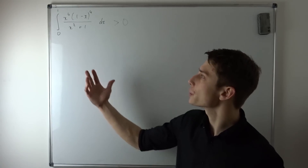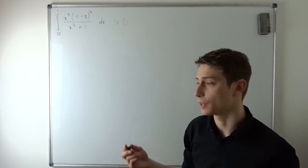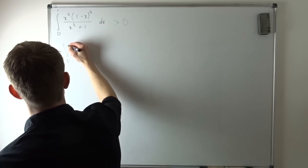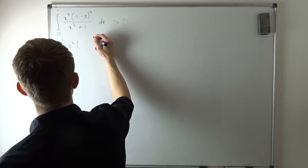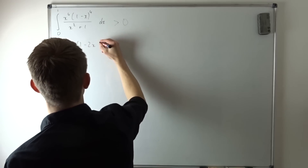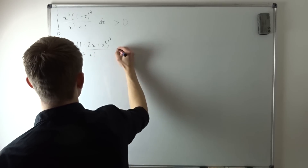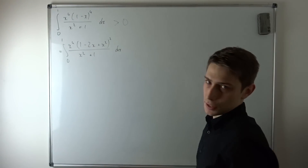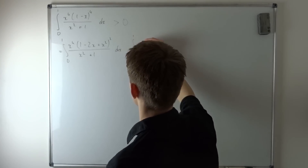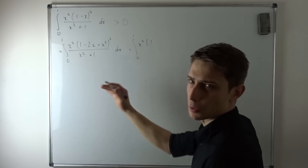With that out of the way, let's get started with the integral. First, we can factor out the (1 minus x) to the fourth power. We note that (1 minus x)² equals (1 minus 2x plus x²), so (1 minus x)^4 equals (1 minus 2x plus x²) squared. This gives us the integral from 0 to 1 of x to the fourth power times (1 minus 2x plus x²) squared over (x squared plus 1) dx.